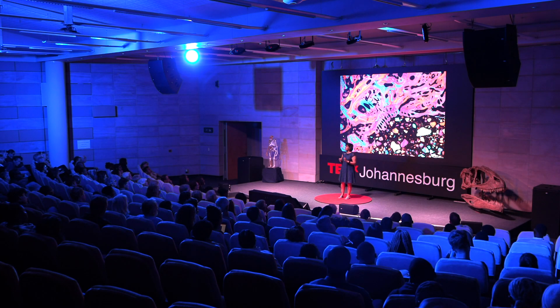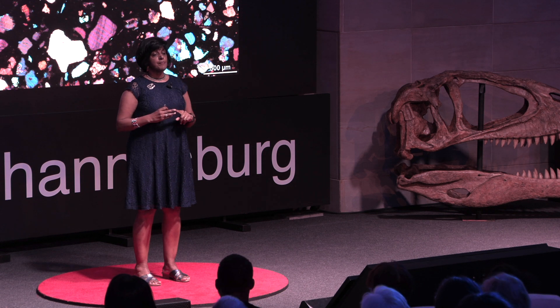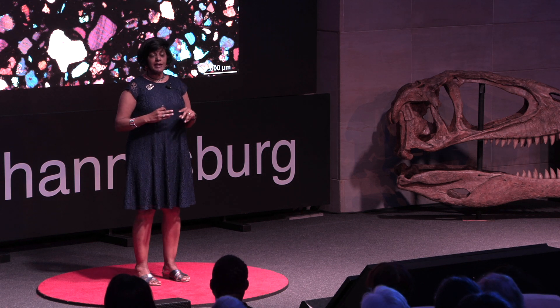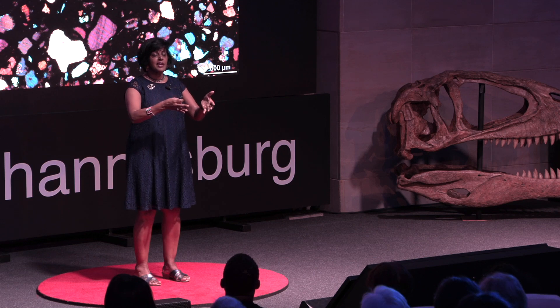Sometimes we find absolutely weird bone. We can look at this bone and realize immediately there's something going on here. In this case, it's a dinosaur from Argentina — a large titanosaur. We see the abnormality, but we have absolutely no idea what caused this pathology.